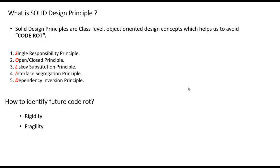What are the other things we can look for? The other thing is fragility. Fragility is a condition where when you go to test the code for one feature, it will create a problem for another feature. The other one is immobility. Immobility is a condition where it is very difficult for a developer to extract one piece of code or one module from the application and reuse it in another application. If you are seeing these three terms — rigidity, fragility, and immobility — in the code, you can say that the code is going to create code rot for future developers.